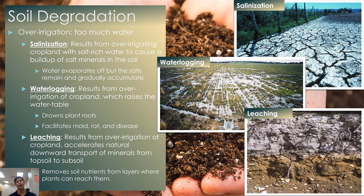Let's begin with over-irrigation — simply applying too much water to our soils. With intensification of agriculture, increasing water inputs can increase yields since plants grow faster. However, over-irrigating can degrade the soil in three ways: salinization, waterlogging, and leaching.